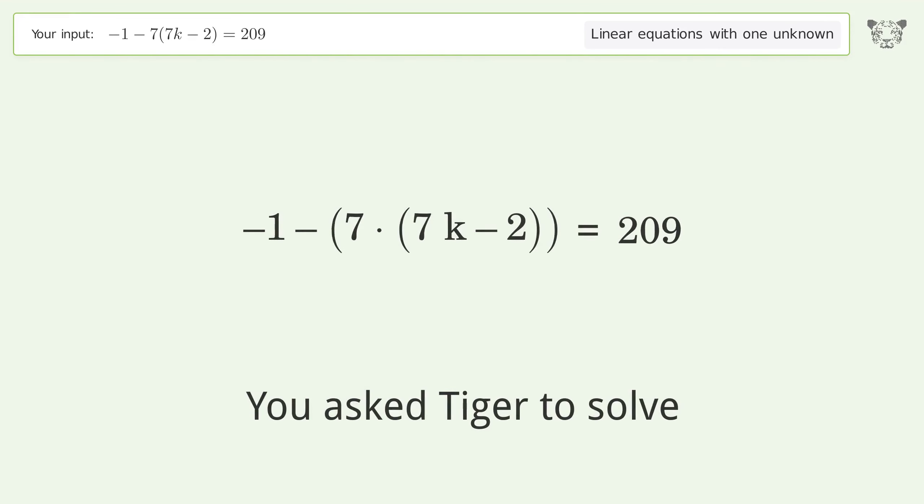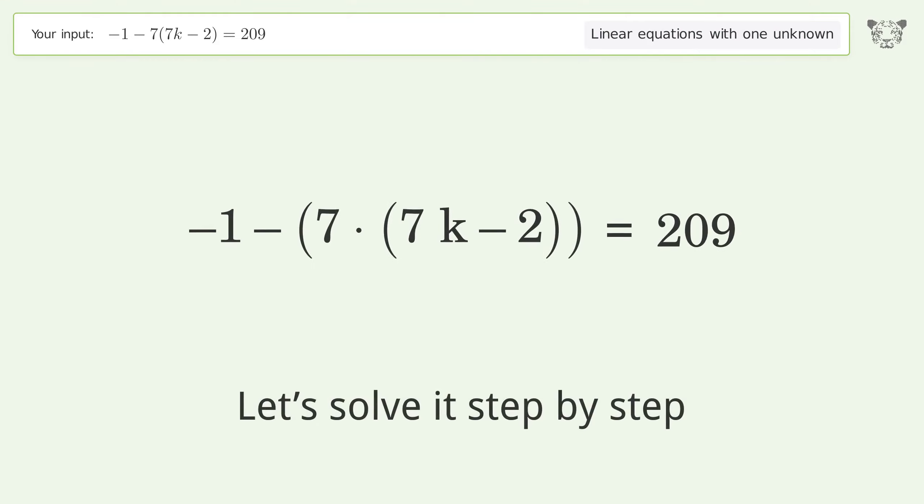You asked Tiger to solve this, which deals with linear equations with one unknown. The final result is k equals negative 4. Let's solve it step by step. Simplify the expression.